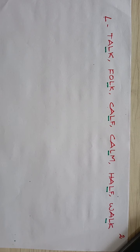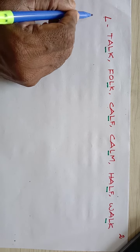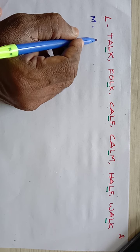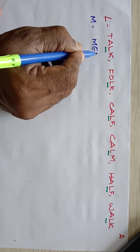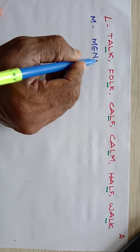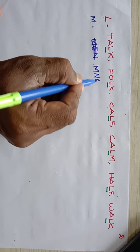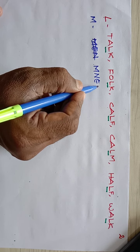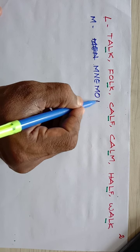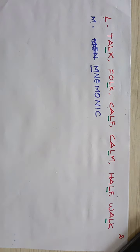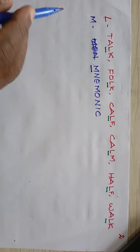Next, M is silent. The example is: mnemonic — M-N-E-M-O-N-I-C. Here M is silent.